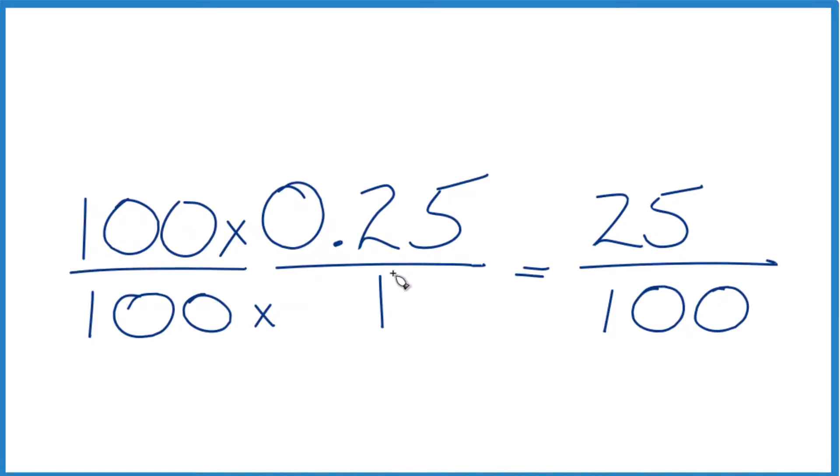So 25 over 100, we do have a fraction now but it's not in simplest terms. So 5 would go into 25 and 100 evenly, but 25 would also go into 25 and 100. So that might be the best way to do it. Divide 25 by 25, you get 1. Divide 100 by 25, you get 4.